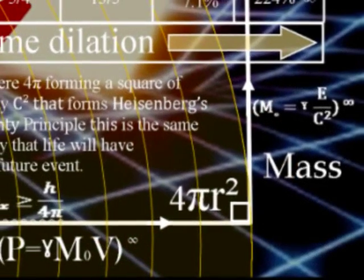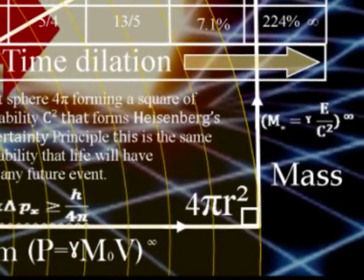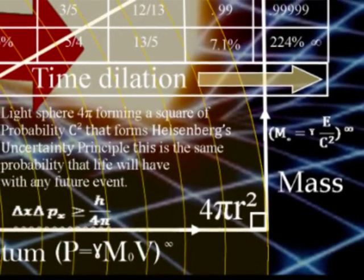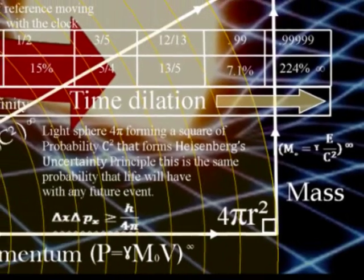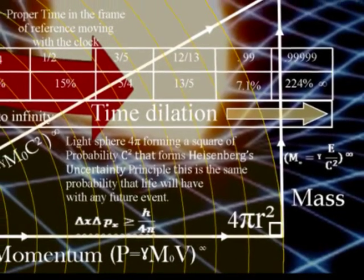Mass will increase relative to this, therefore forming the curvature of spacetime. In this theory, this is a universal process.